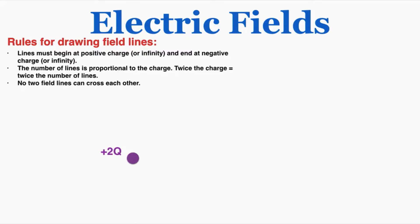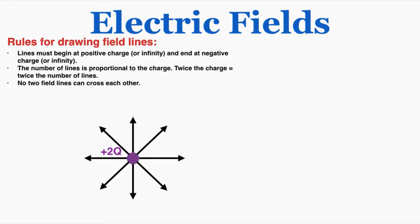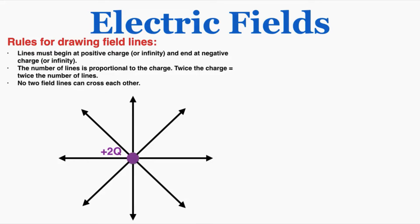For a charge of positive 2Q — double the charge — I should double the number of field lines, so I'll draw eight lines coming out of this charge. Again, for any point around this charge, these are the directions a positive charge would be pushed away. They follow the rules: they begin at a positive charge and end at infinity. The reason no two field lines can cross is that crossing would imply two different directions a positive charge could go from a single point, which can't happen.